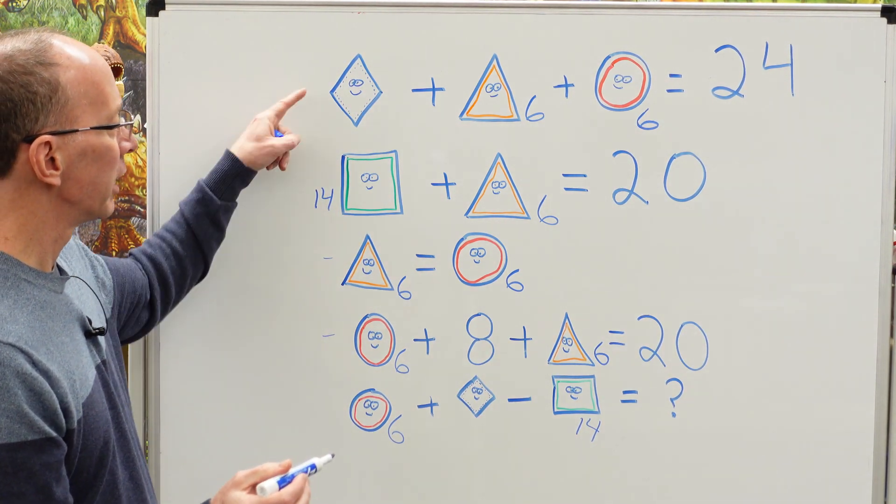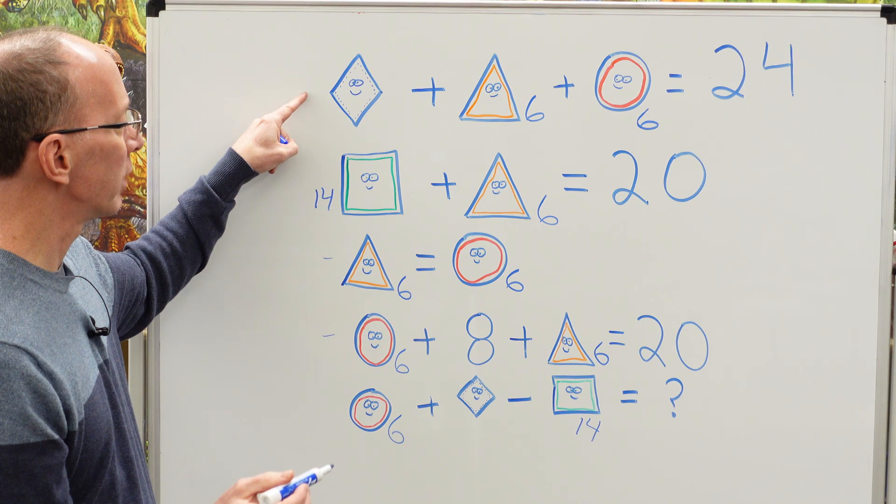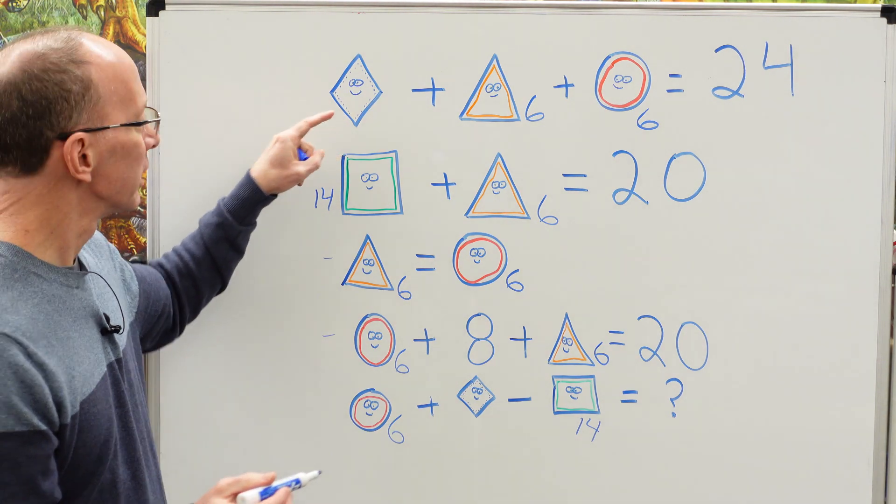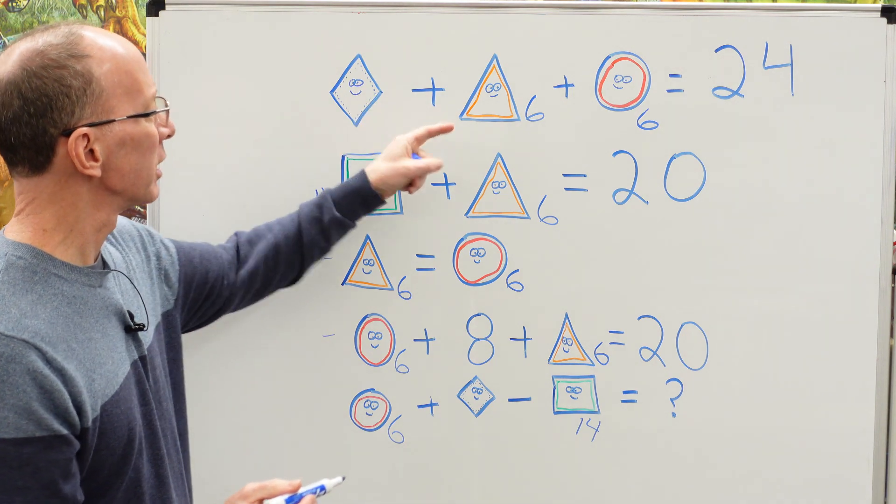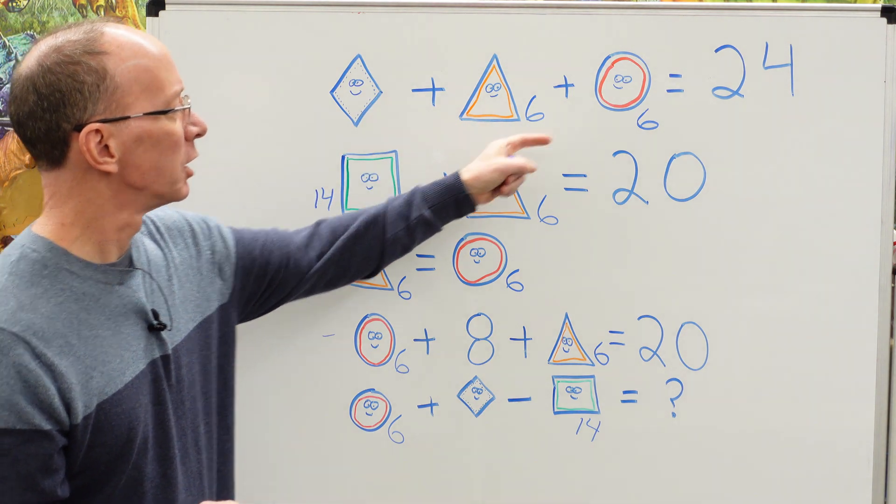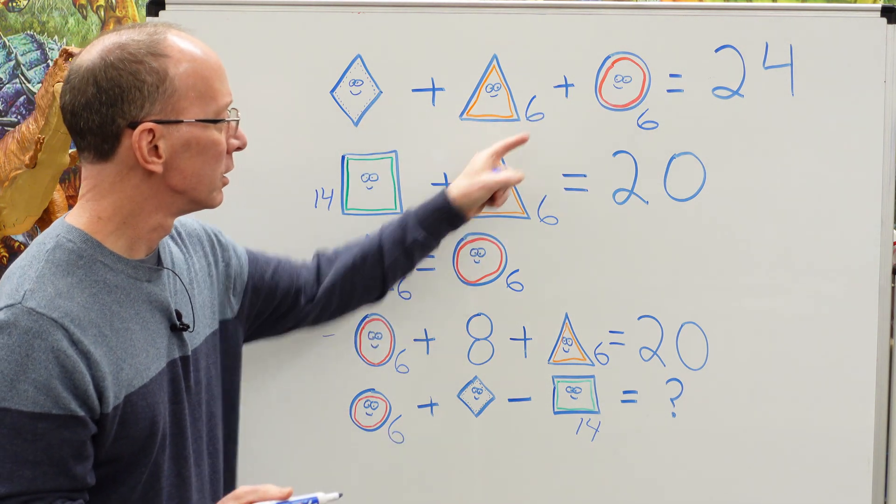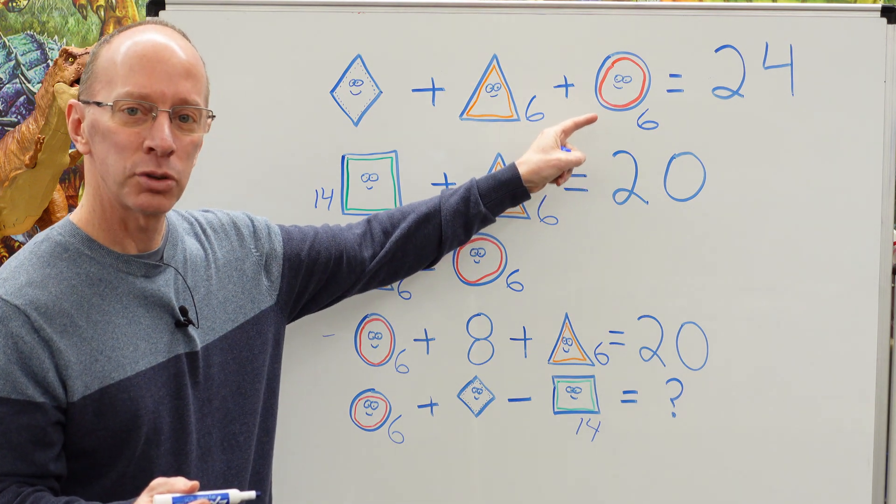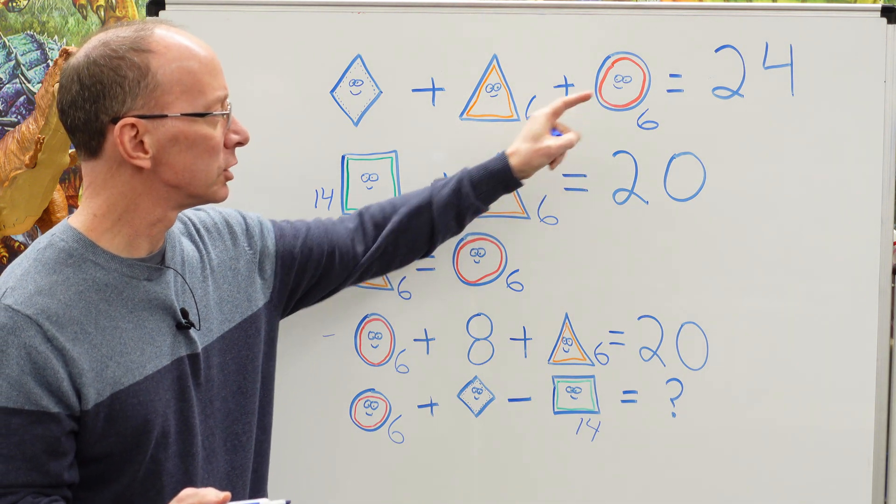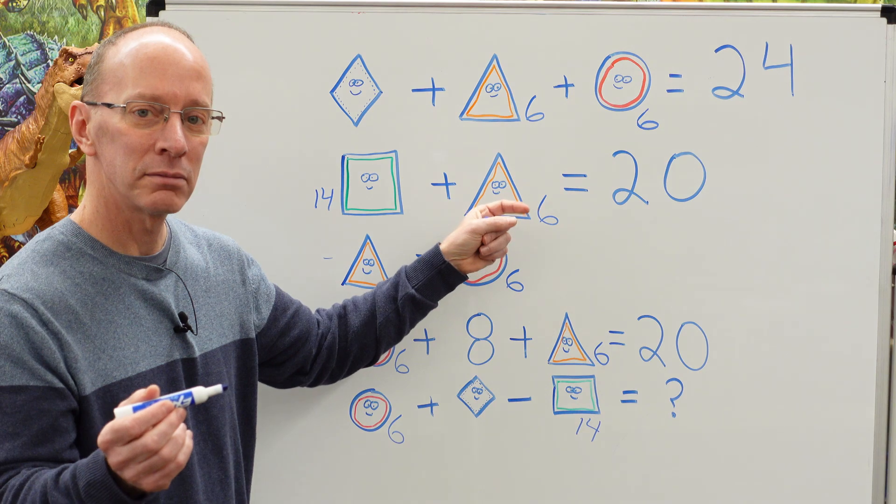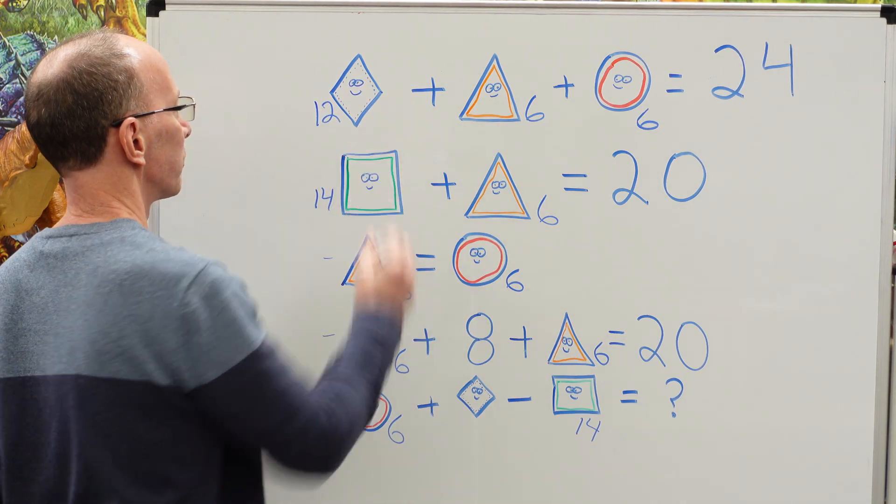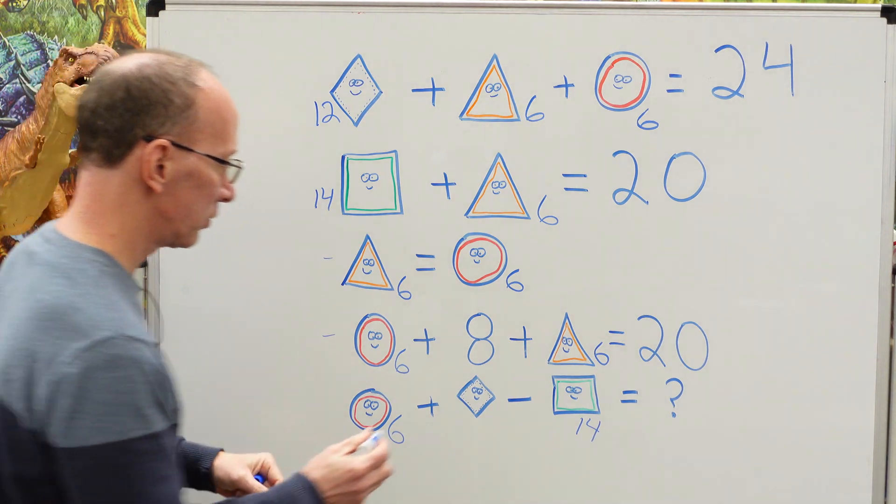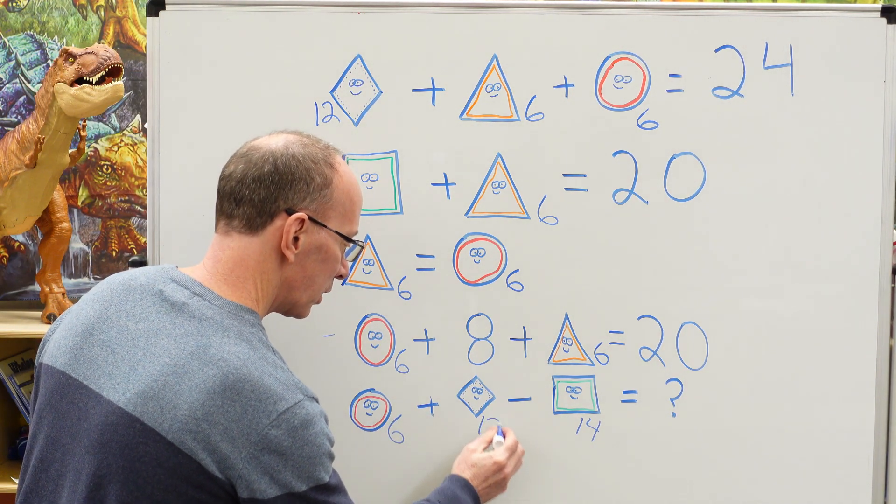Okay. Now let's go ahead and try to tackle this one right here. Some number, this is kind of like a triangle right here. Not a triangle, a diamond, a diamond plus a triangle, which is six plus six equals 24. So six plus six is 12. And 24 minus 12 would be 12. So this right here is 12. Our diamond is 12. I'm going to go ahead and put a 12 right here.